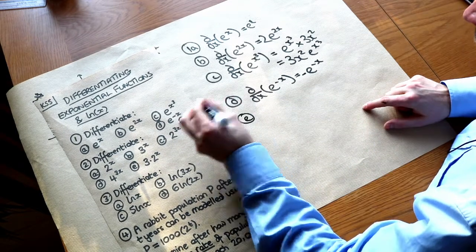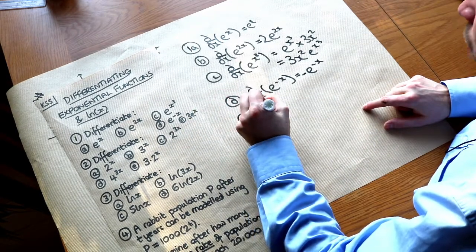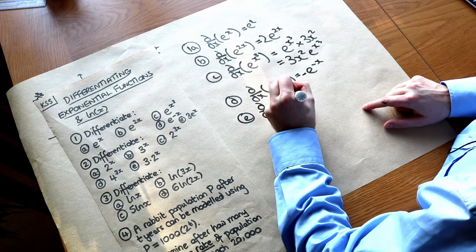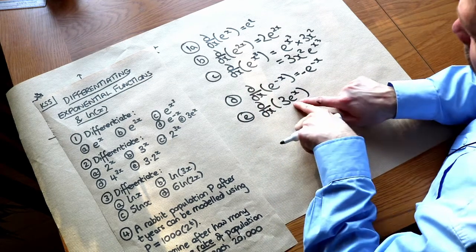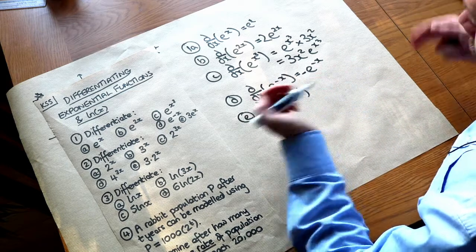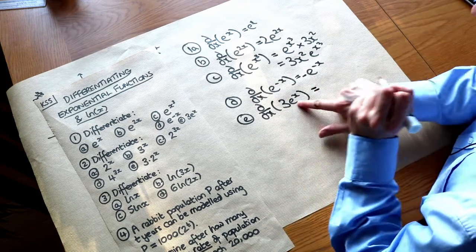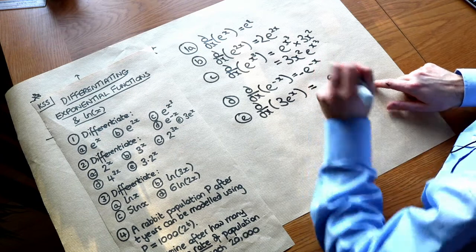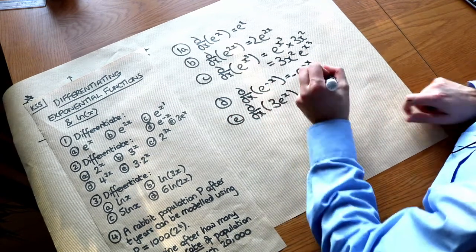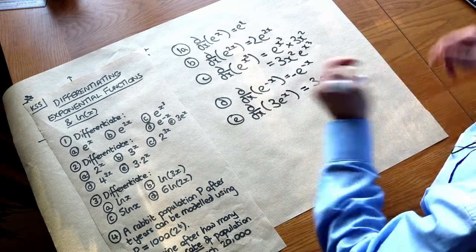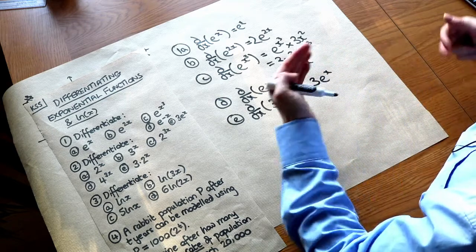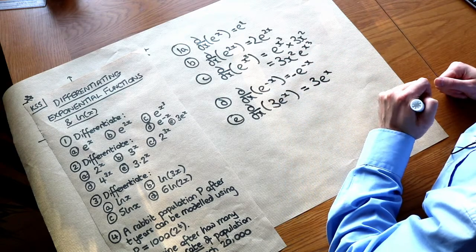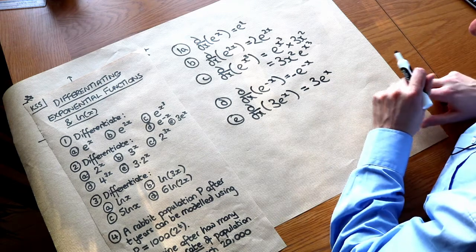And what about 3e to the x? Well in general if you scale an expression, so here we've multiplied e to the x by 3, it would also multiply the gradient function by 3 as well. So if the e to the x differentiates to e to the x then if we times that by 3 we also times the result by 3. It's the same for integration. If you scale the expression by multiplying it by a constant we also scale the integral as well.